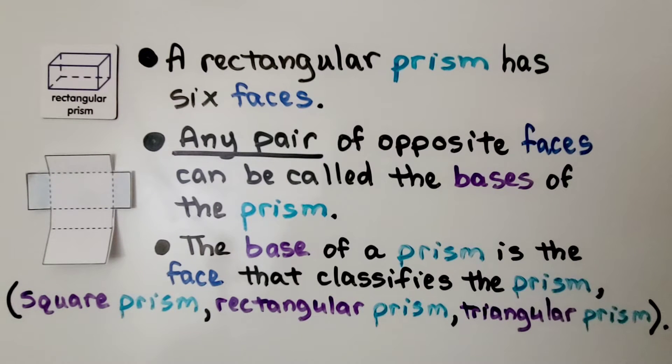A rectangular prism has six faces. Any pair of opposite faces can be called the bases of the prism.